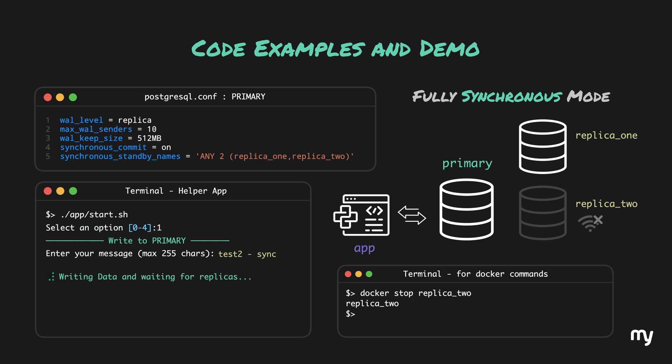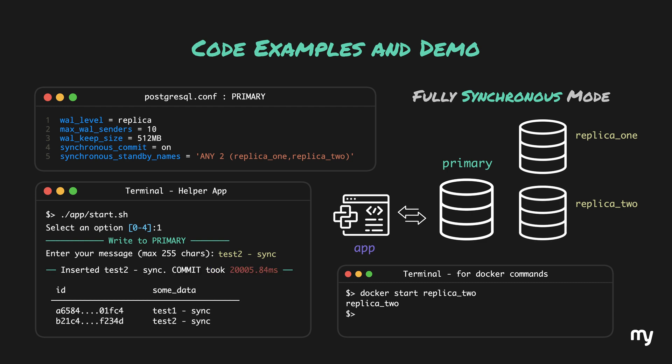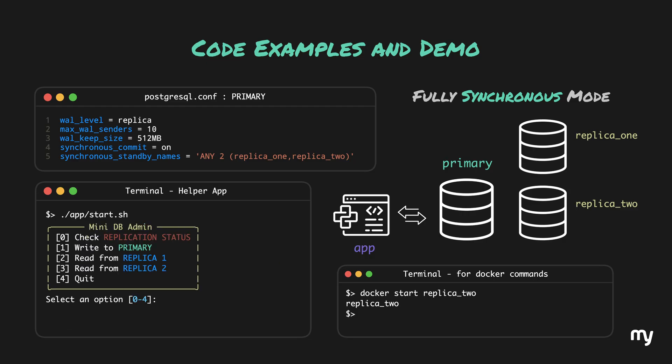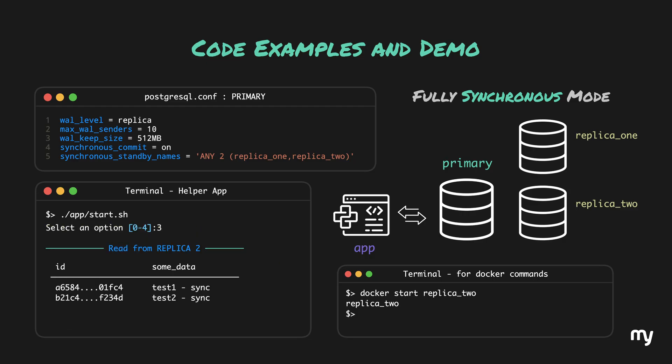Let's try to bring replica2 back to life with the docker start command. As you can clearly see, our prompt is now unblocked. Now if we query replica2, we should see our data — which shows as expected.